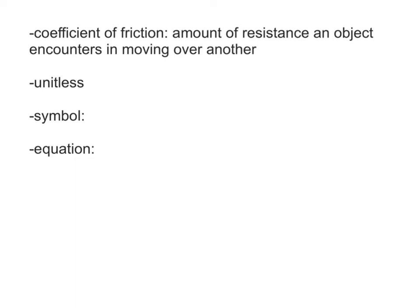The coefficient of friction is the amount of resistance an object encounters in moving over another. What coefficient of friction depends on is the surface itself. If you have a rough surface, you're going to have a high coefficient of friction. If you have a very smooth surface, such as ice, it's going to be a low coefficient of friction. Most of these are less than one. It is possible to have a coefficient of friction greater than one, but very rare.